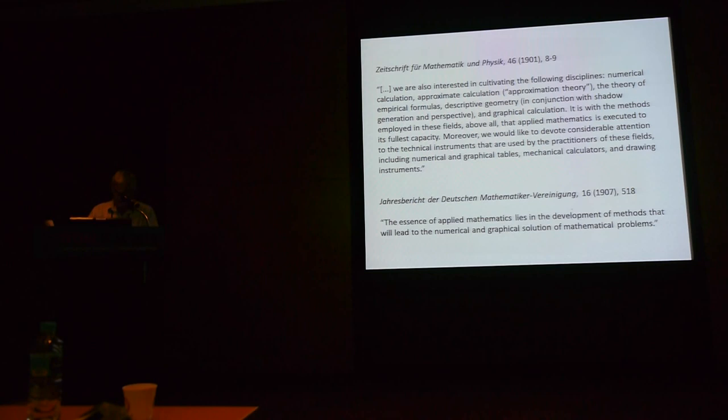This is actually around 1900 that mathematicians began to formulate what is meant by applied mathematics. Germany, and particularly Göttingen, played a leading role in this international process of institutionalization of applied mathematics as an autonomous domain. Encouraged by Felix Klein, Karl Runge and Ludwig Prandtl assumed in 1901 the editor-in-chief of the Zeitschrift für Mathematik und Physik and devoted this journal to applied mathematics. In 1904, Runge accepted the first full professorship of applied mathematics at the University of Göttingen. In 1907, German applied mathematicians adopted the following definition: The essence of applied mathematics lies in the development of methods that will lead to the numerical and graphical solution of mathematical problems.